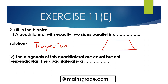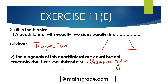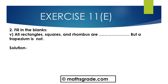Part D: the diagonals of this quadrilateral are equal but not perpendicular — the quadrilateral is a rectangle. Part E: all rectangles, squares, and rhombuses are parallelograms but a trapezium is not a parallelogram.